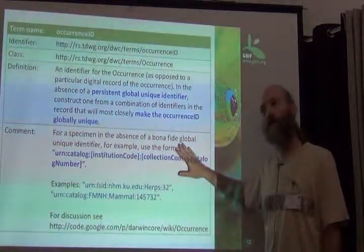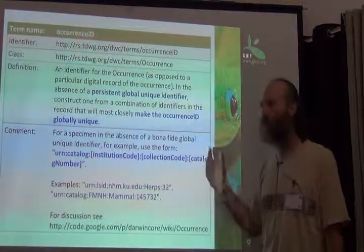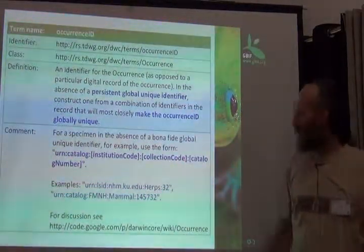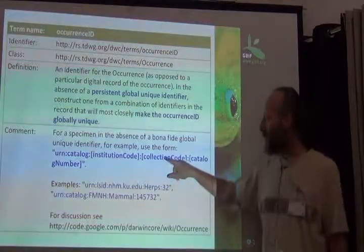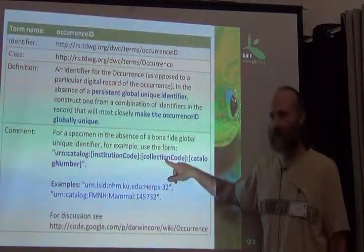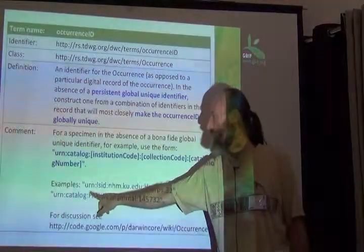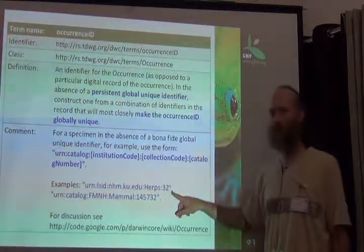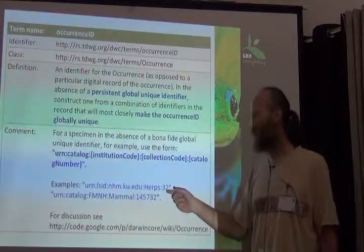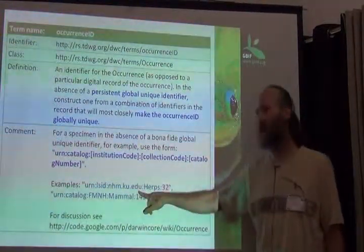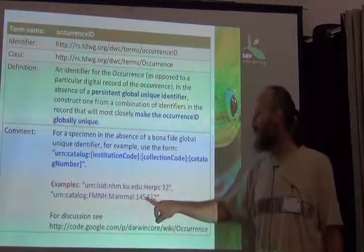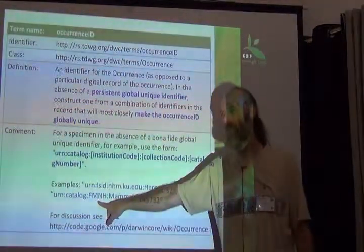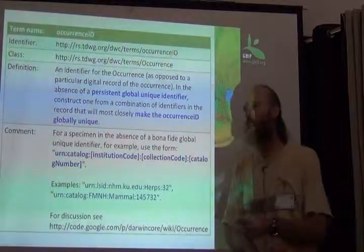There are some limitations on this, and I'll go through the rest of the information about global unique identifiers and discuss why this could be good or bad. Here are a couple of examples of what the constructed identifier would look like: one is 'urn:lsid:nhm.ku.edu:herps:32', which should be catalog number 32 in the Herps Collection at the University of Kansas. Another is catalog number 145732 in the Mammal Collection at the Field Museum — uniquely identifying those specimens, hopefully.